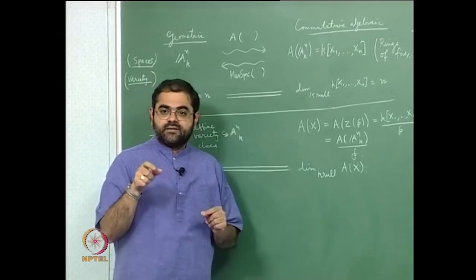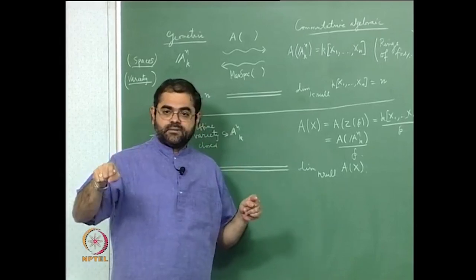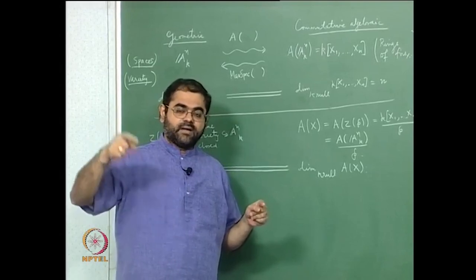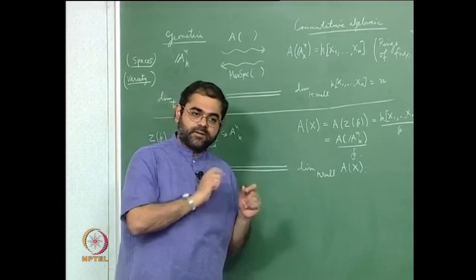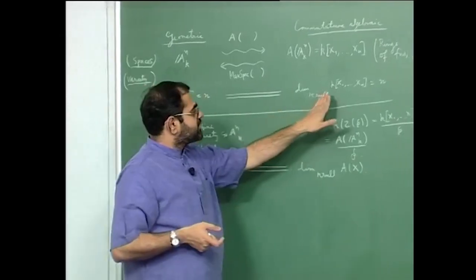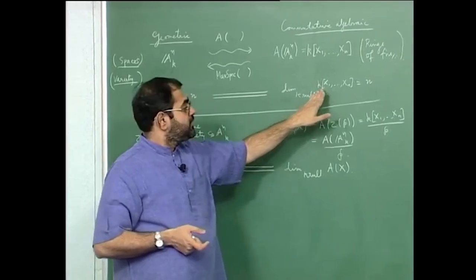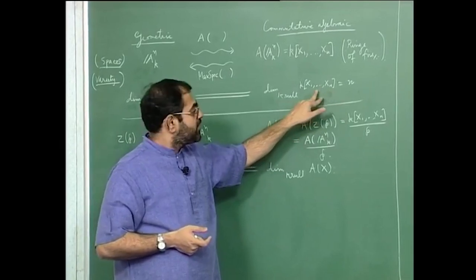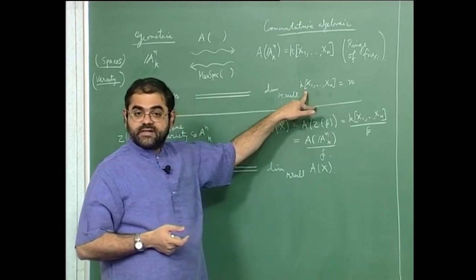That is the reason in all these definitions, instead of taking a chain from z1 to zm and calling the dimension one less than that length, we start with index 0. And the Krull dimension of the polynomial ring equals n because whenever you have a finitely generated algebra — a quotient of the polynomial ring which is an integral domain — the Krull dimension is the transcendence degree over k of its quotient field.